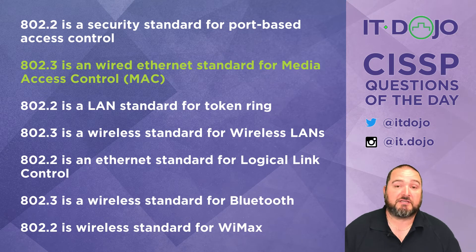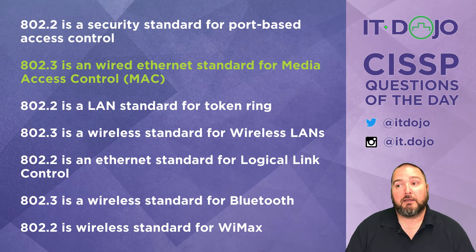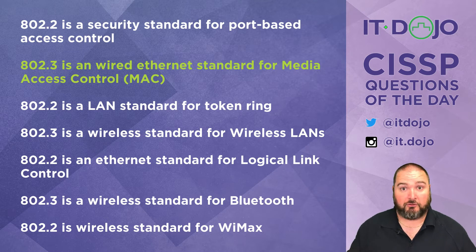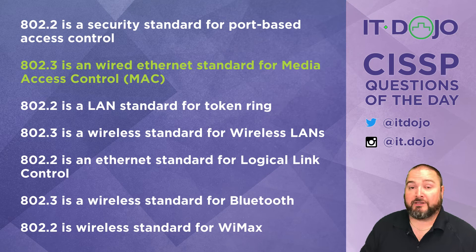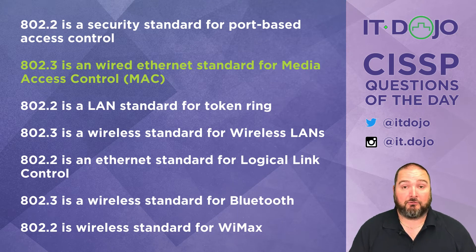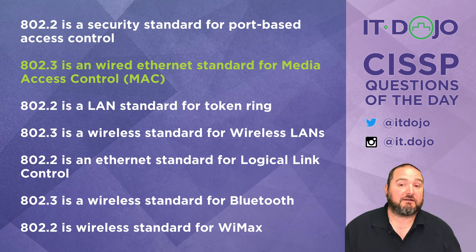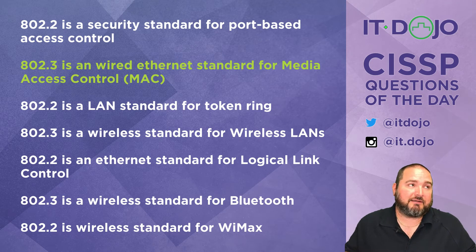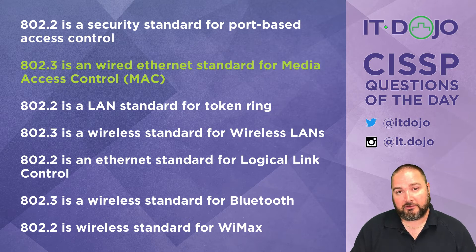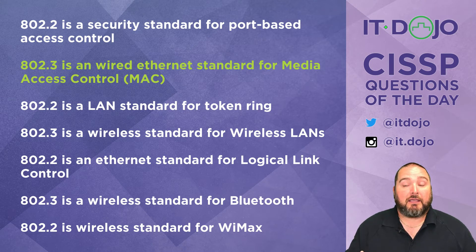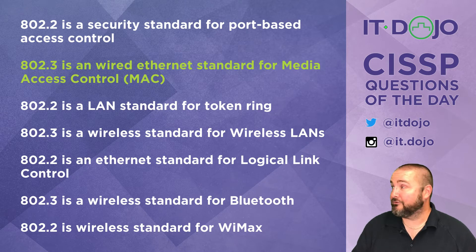The next option says that 802.2 is a LAN standard for token ring — no. Token ring is 802.5, so that's not correct. How about 802.3 being the standard for wireless LANs? That can't be right either, because 802.3 is the standard for media access control in Ethernet LANs, and 802.11 is the standard for wireless LANs.